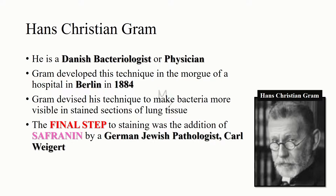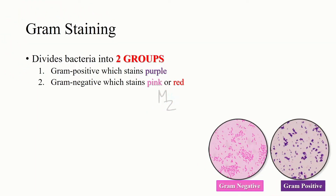Gram devised his technique to make bacteria more visible in stained sections of lung tissue. The final step to staining — the addition of safranine — was done by a German pathologist called Weigert. Gram staining separates most bacteria into two groups: number one, the gram positive bacteria, which stain purple, and the gram negative, which stain pink or red.